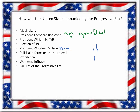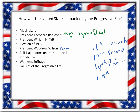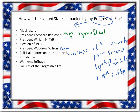Four amendments were all passed during Wilson's time in office — 16, 17, 18, and 19. The 16th is the graduated income tax, the 17th is the direct election of senators by the people, the 18th is Prohibition, and the 19th is women's suffrage. The most progressive state was Wisconsin — Robert La Follette was an incredibly progressive politician there. Remember things like initiative, recall, referendum — all giving more power to the people — and the secret ballot. Much of the Progressive Era gets its ideals from the Populist Party.